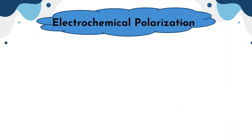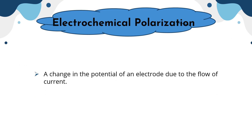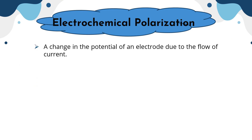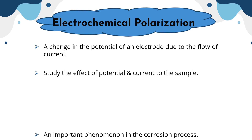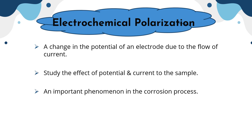Electrochemical polarization is a mechanism that results in a change in the potential of an electrode due to the flow of current. It is used to study the effect of applying potential and current to the sample. It is an important phenomenon in the corrosion process.